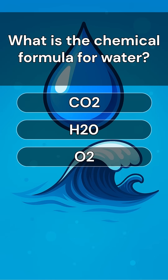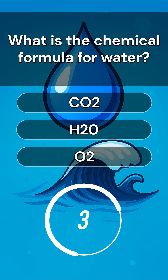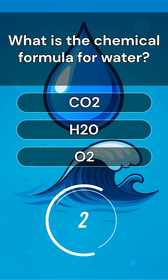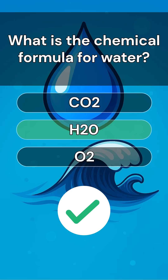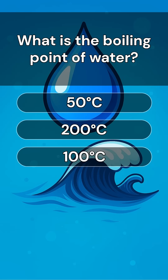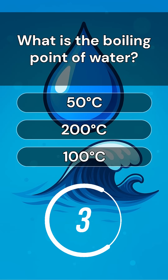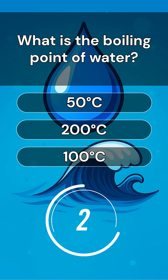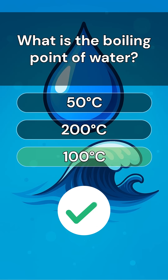What is the chemical formula for water? Answer is H2O. What is the boiling point of water? Answer is 100 degrees Celsius.